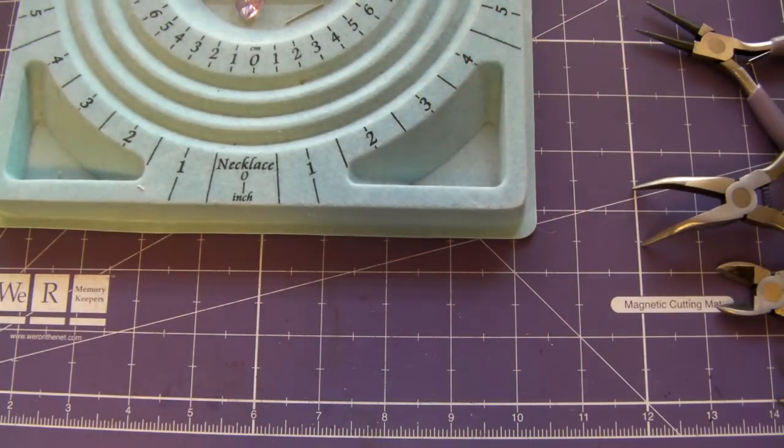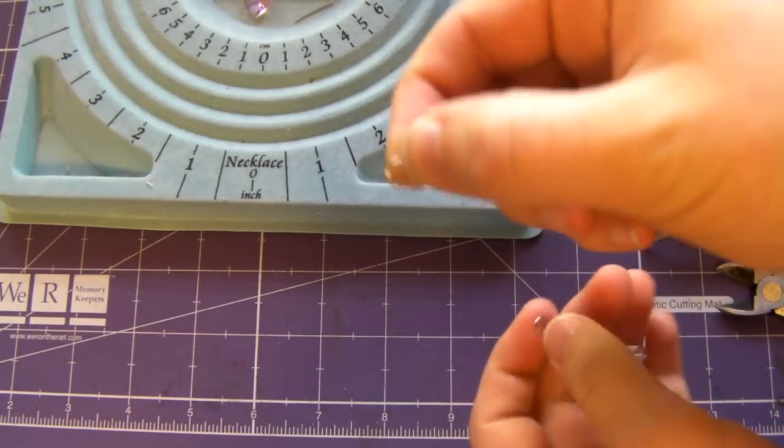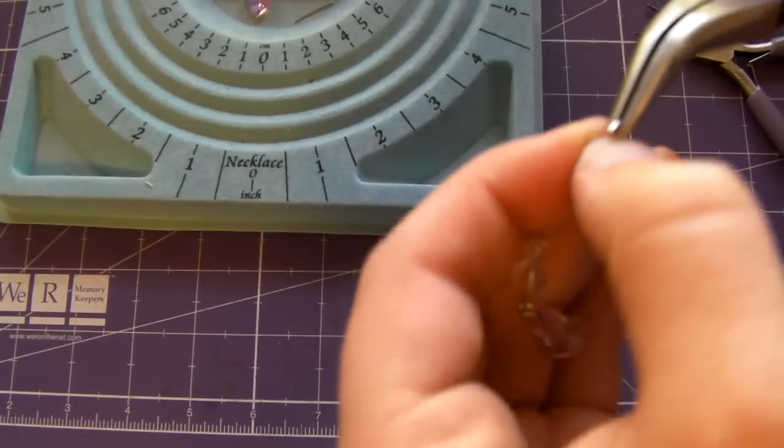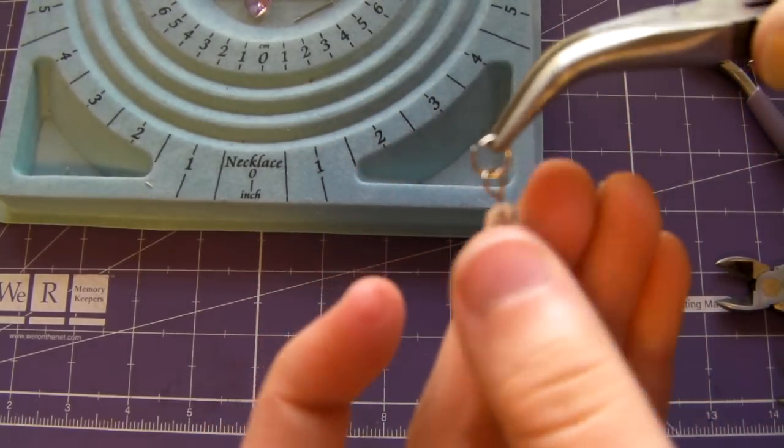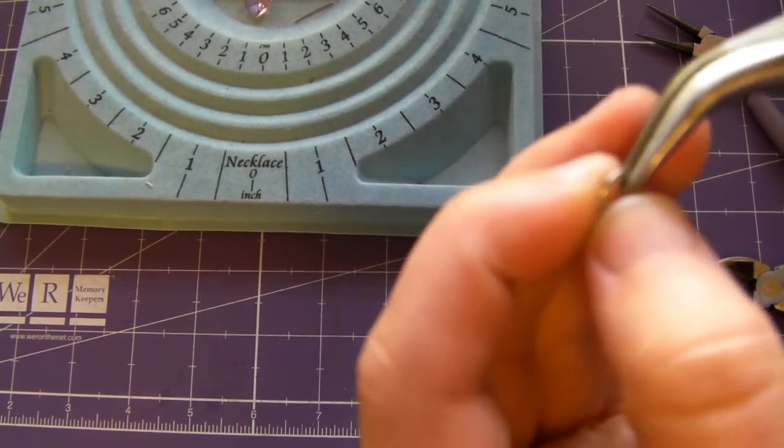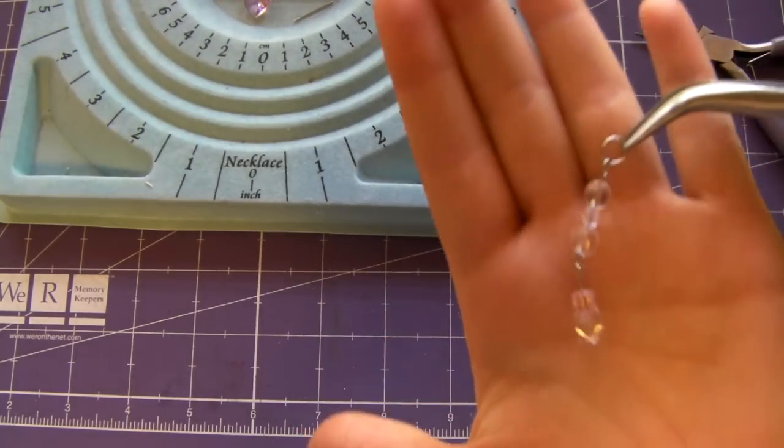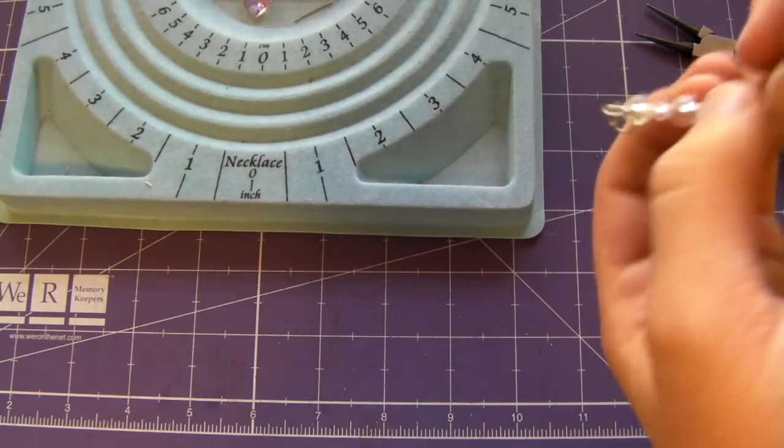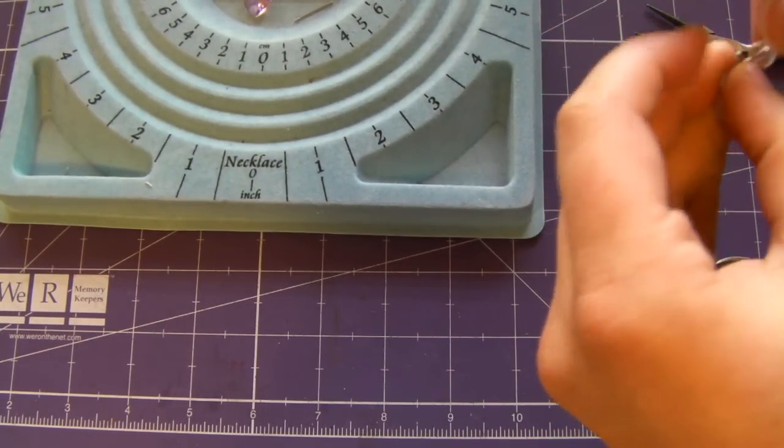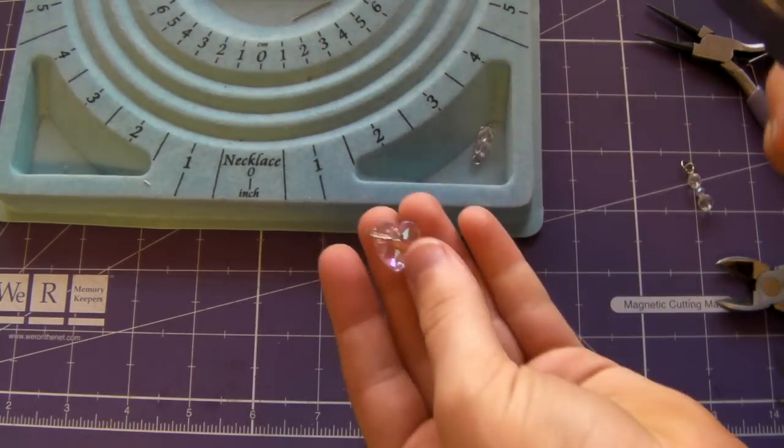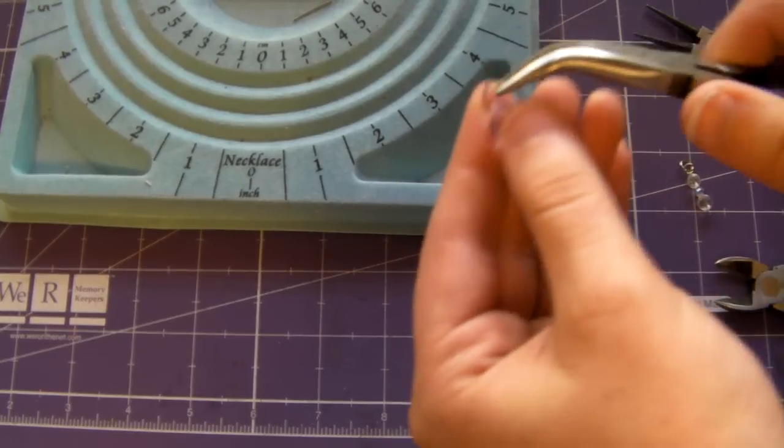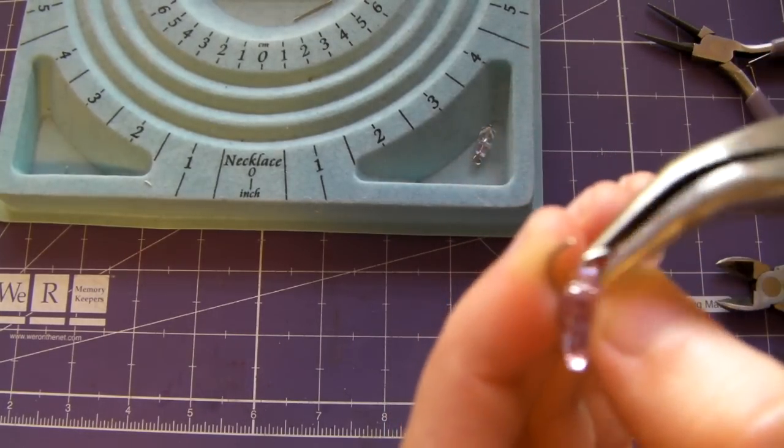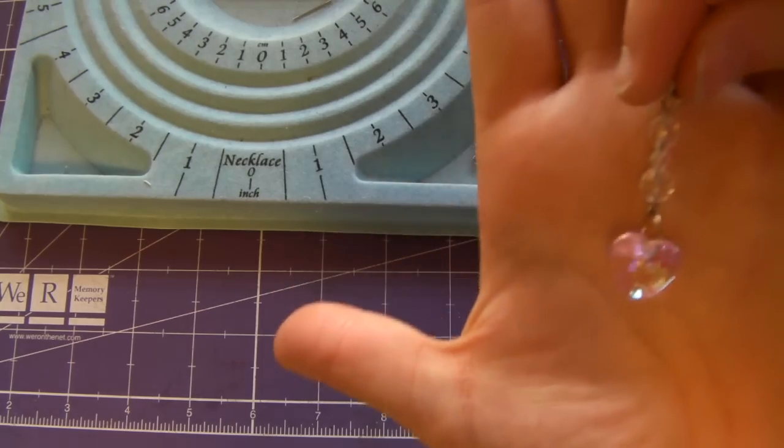And then you'll take your jump ring and you'll open it up the same way. You'll find the opening and you'll just take your finger. This is good when you have two pliers. You can just take your finger and bend it outward. Put it through the loop in the other one, the top piece. So there you have it. Then you're just going to close it. So there's a basic charm.